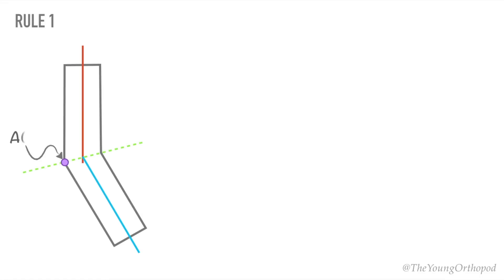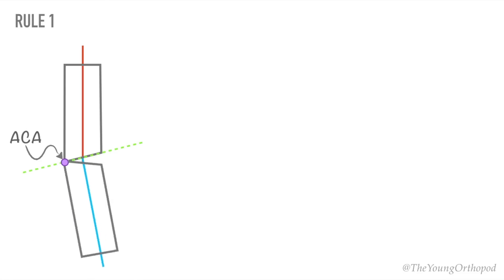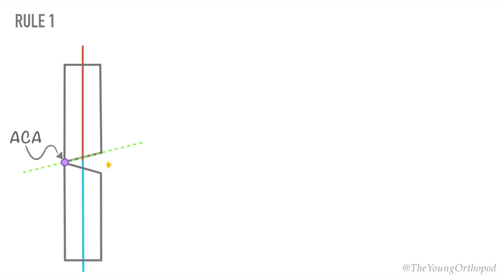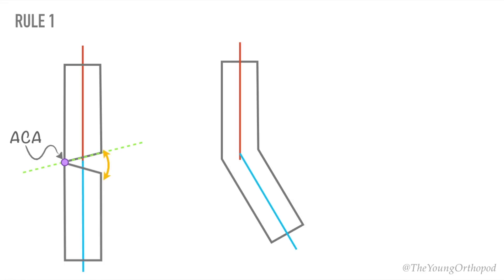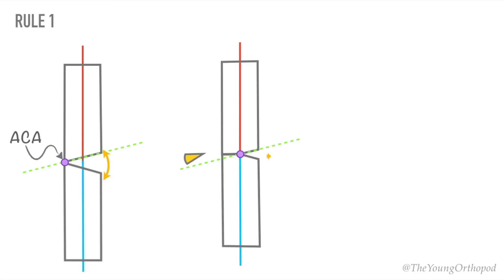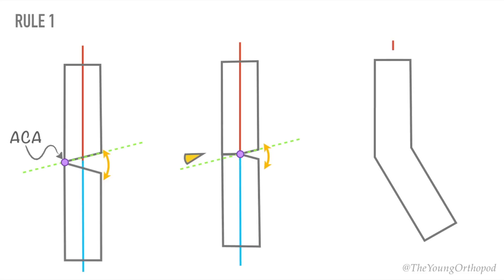If the osteotomy line and the ACA pass through the same CORA, the bone ends will angulate relative to each other without displacement or translation. The axes of the bone proximal and distal to the osteotomy level will become collinear when the magnitude of the angulation is corrected.